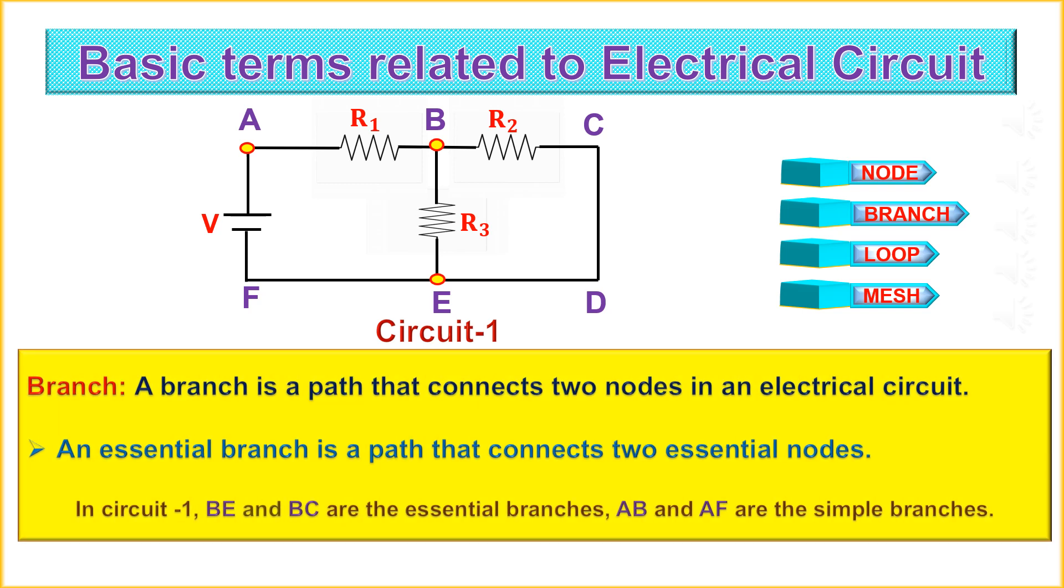A branch is a path that connects two nodes in an electrical circuit. An essential branch is a path that connects two essential nodes. In circuit 1, B-E and B-C are the essential branches but whereas A-B and F are the simple branches. The branch B-C can also be represented as B-C-D-E and the branch F can also be represented as A-F-E because F, E, D and C are all common points.